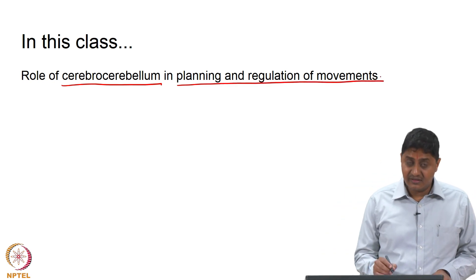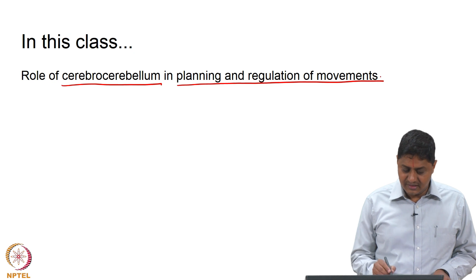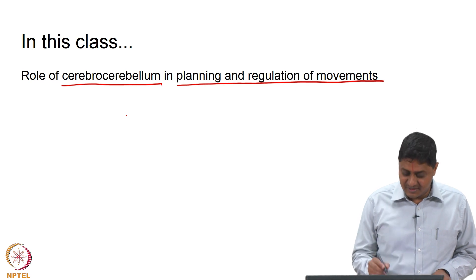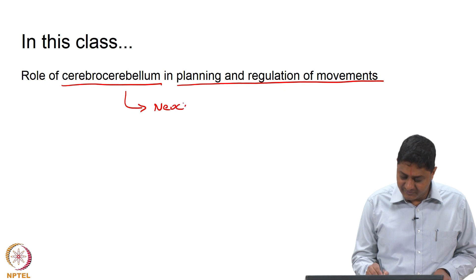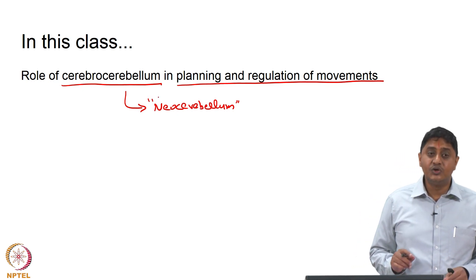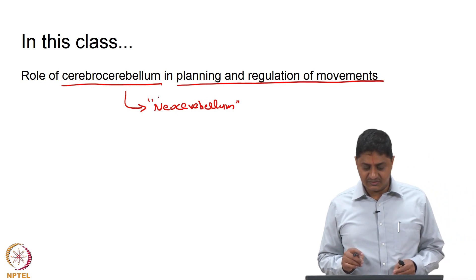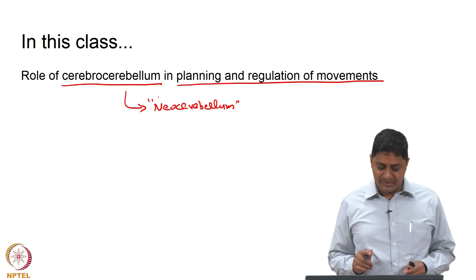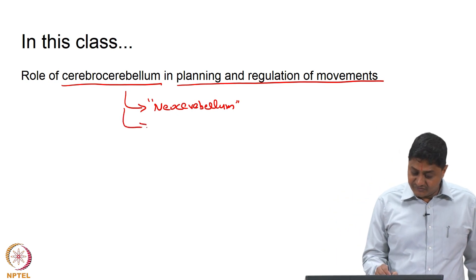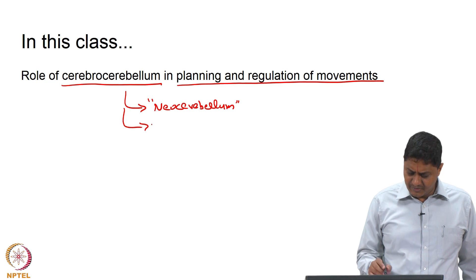Cerebrocerebellum is the lateral cerebellum, considered to be evolutionarily advanced, which is why it is also called the neocerebellum. We have discussed in a previous class that cerebrocerebellum is the newest addition evolutionarily. Since it receives input mainly from the pons, it is also called the pontocerebellum.